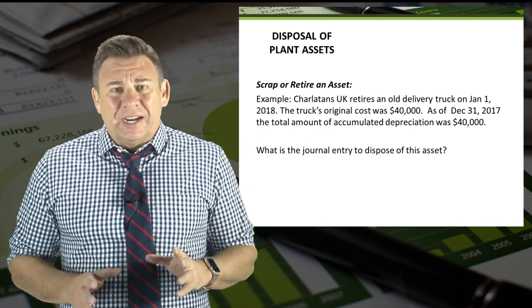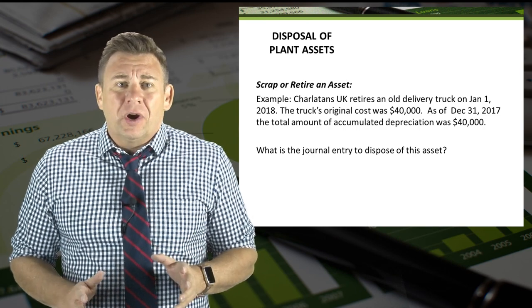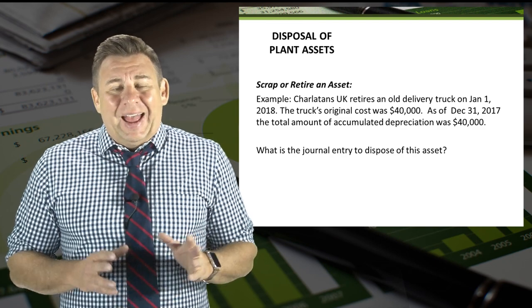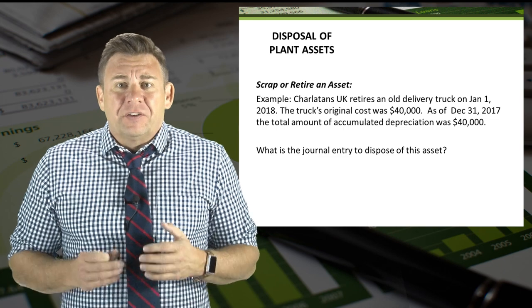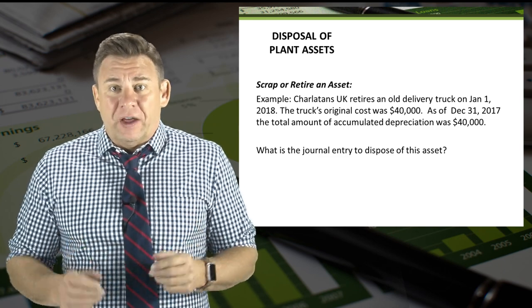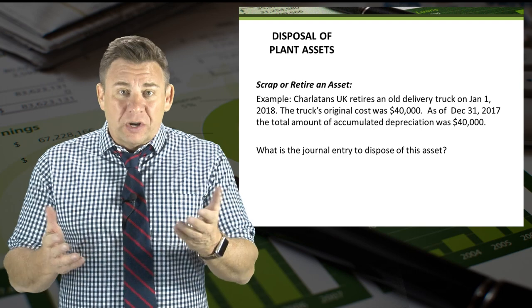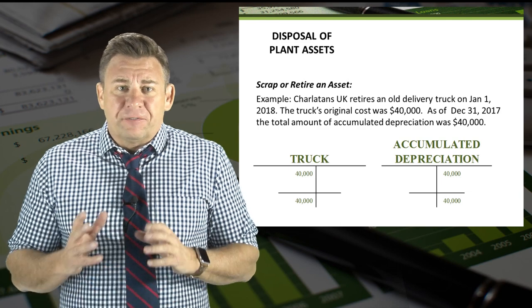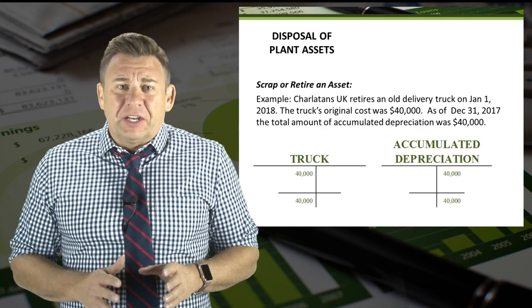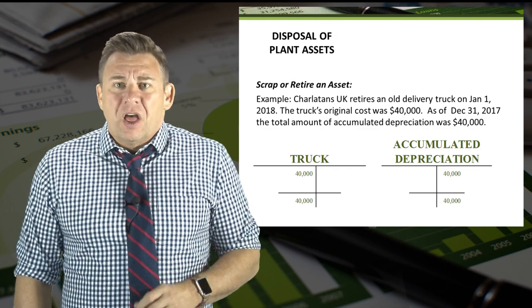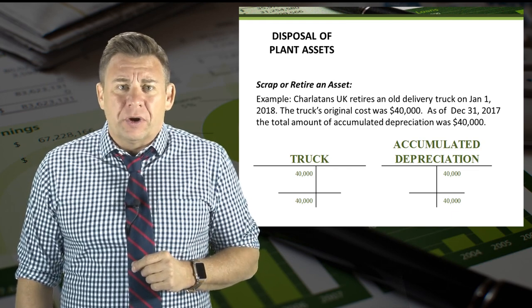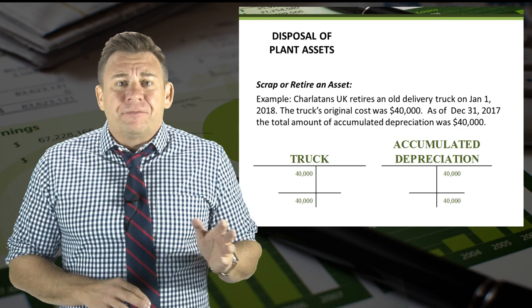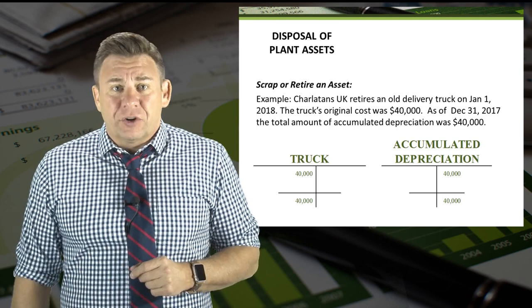Let's look at an example. Charlatans UK retires an old delivery truck on January 1, 2018. The truck's original cost was $40,000. As of December 31, 2017, the total amount of accumulated depreciation was $40,000. Since this example occurs on the first day of the year, we can assume the accumulated depreciation account has the correct balance, so no additional depreciation needs to be recorded. The T-accounts show the $40,000 debit balance for truck and a $40,000 credit balance for accumulated depreciation.